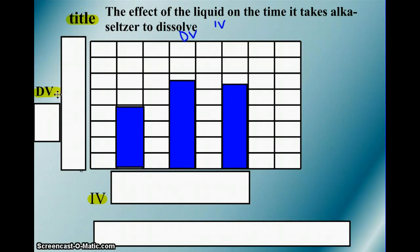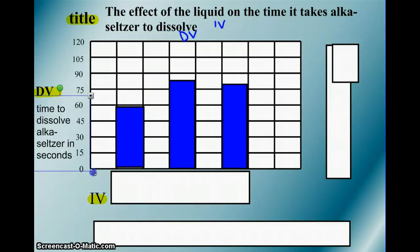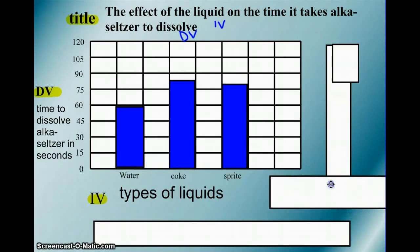So we label our dependent variable on that y-axis and we have consistent spacing in between the numbers and in this case we're going up by 15. So we need to make sure that we're going up by 15 each time. And we have our label. The time to dissolve Alka-Seltzer in seconds. That's our label. And I've labeled units which is seconds.